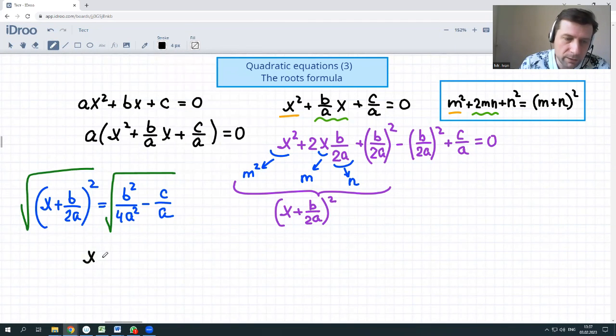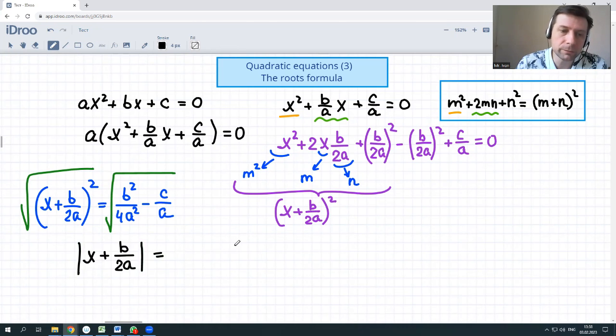So x plus b over 2a. Let's remember, if we take the square root of a square, it's not just the expression, it's the absolute value of that one. So absolute value is equal to the square root of—let's make it a single fraction with 4a squared as the denominator.